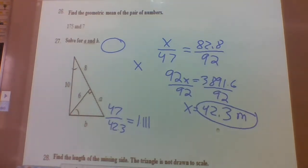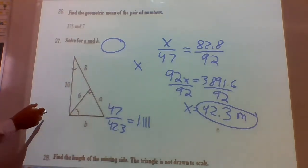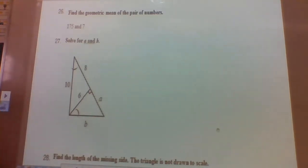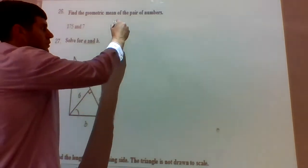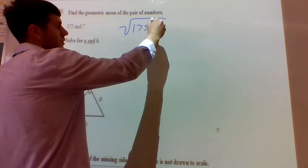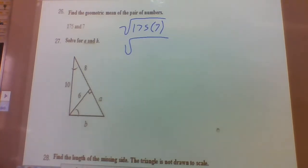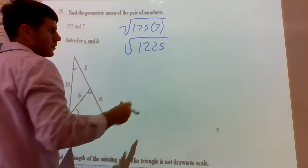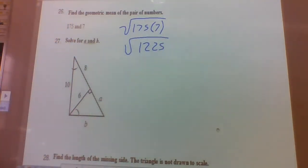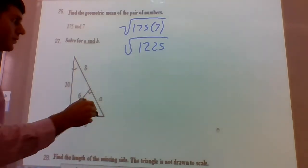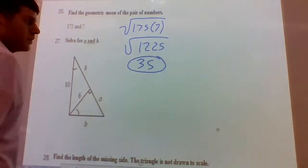Problem 26: find the geometric mean. To find the geometric mean of two numbers, take the square root of their product — since there are two numbers, n is 2. So we take the square root of 175 times 7, which is the square root of 1,225, and that equals 35.